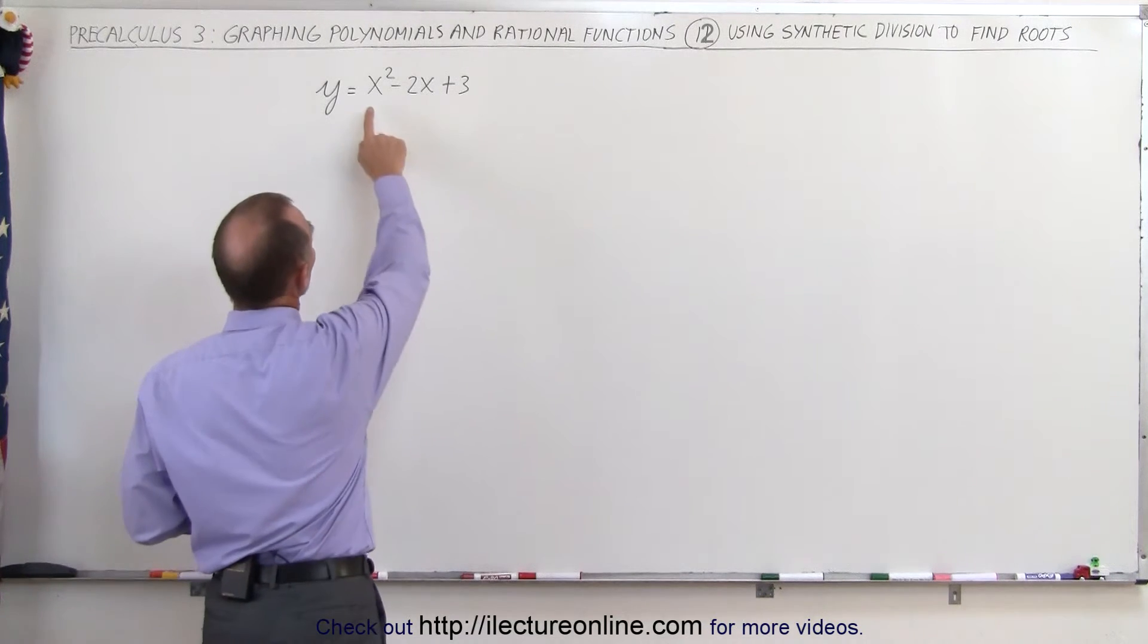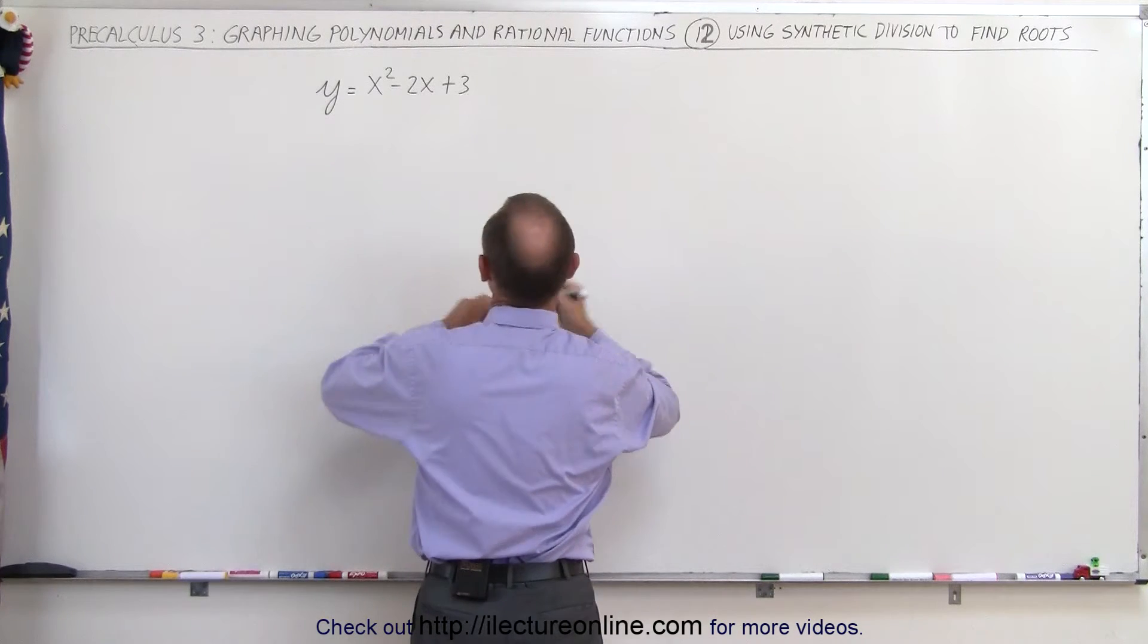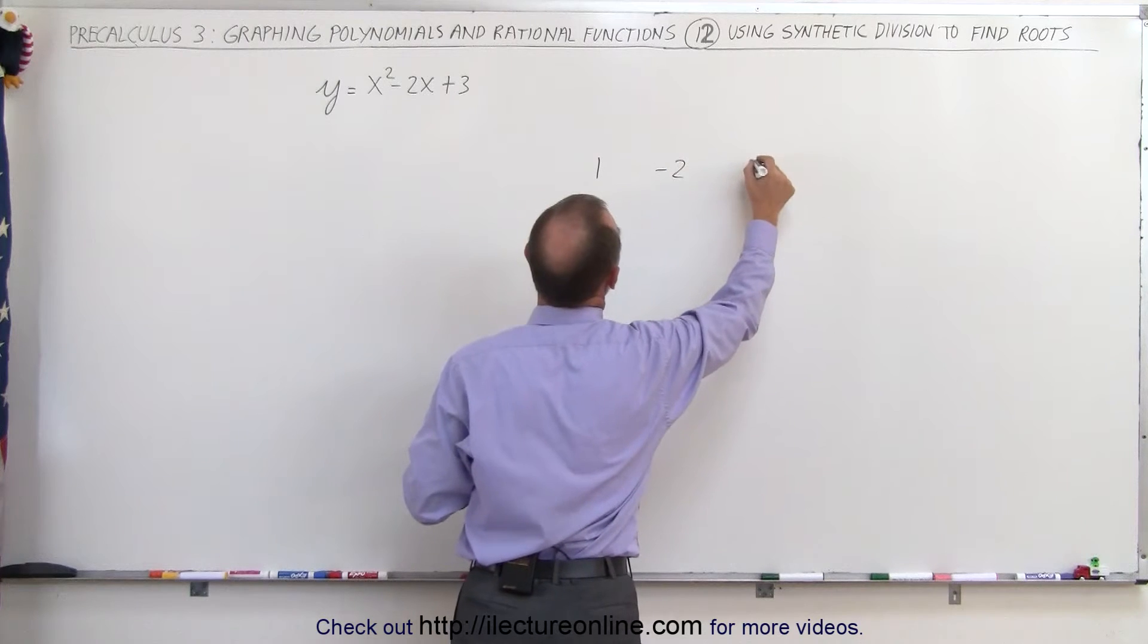First of all, what we're going to do is write the coefficients of the parabola over here. So we have 1, negative 2, and 3.